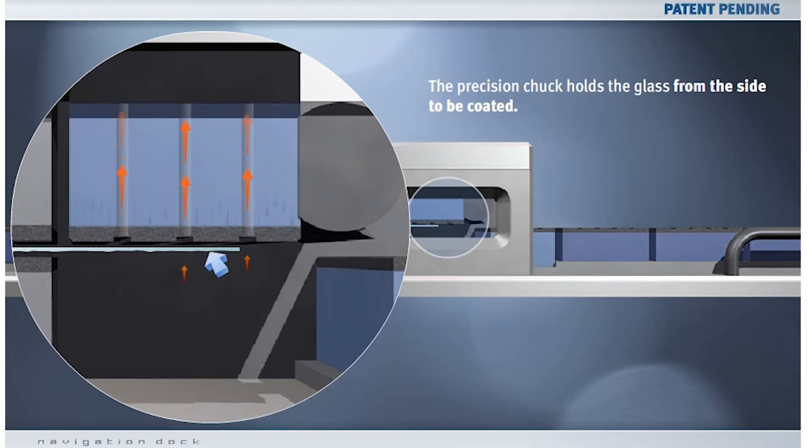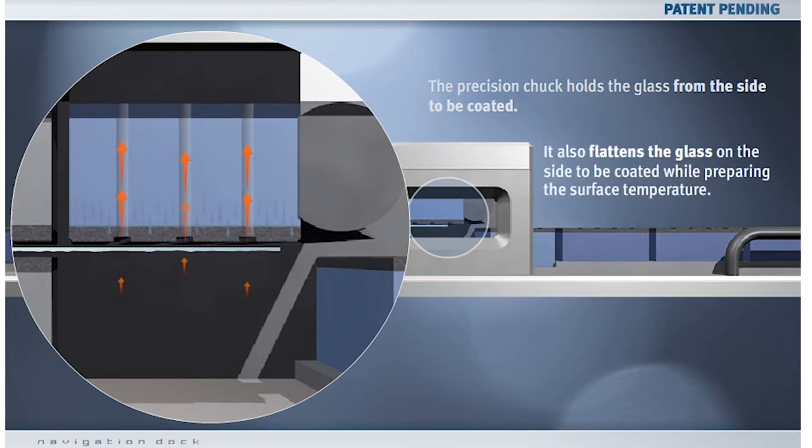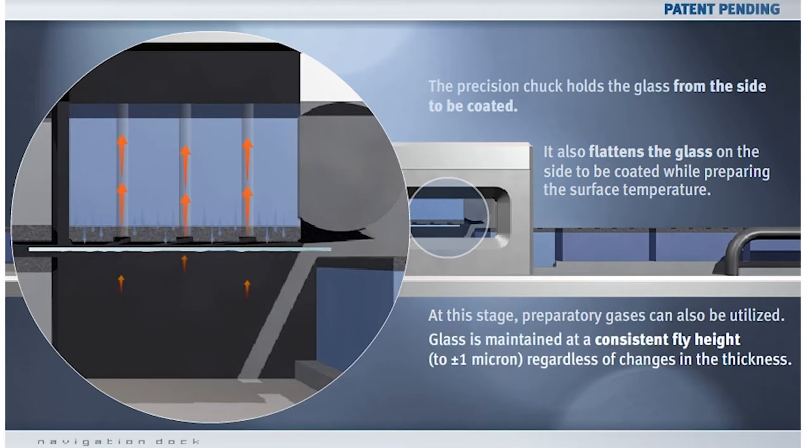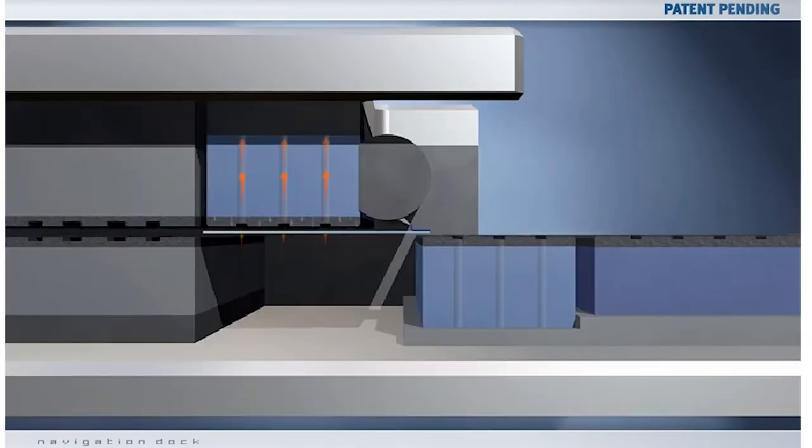By holding the glass from the surface that's about to be coated, we're able to flatten the glass and take out any thickness variation that might be in the glass. We're able to control and drive the temperature of the glass to exactly whatever the temperature we might want to have for the coating process.